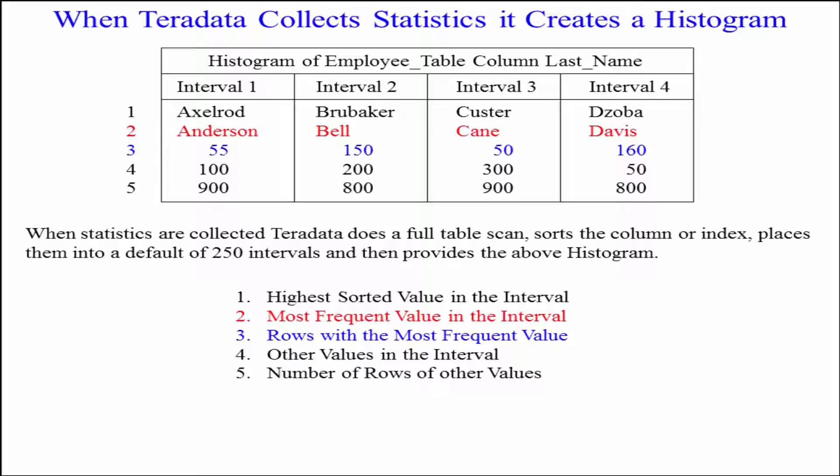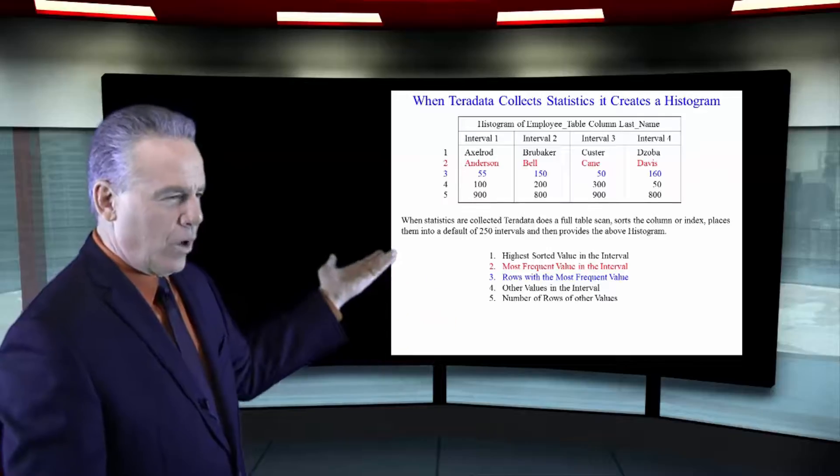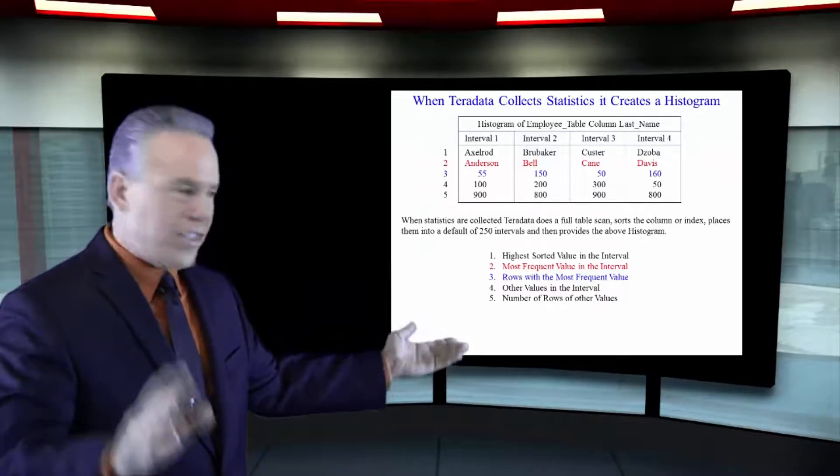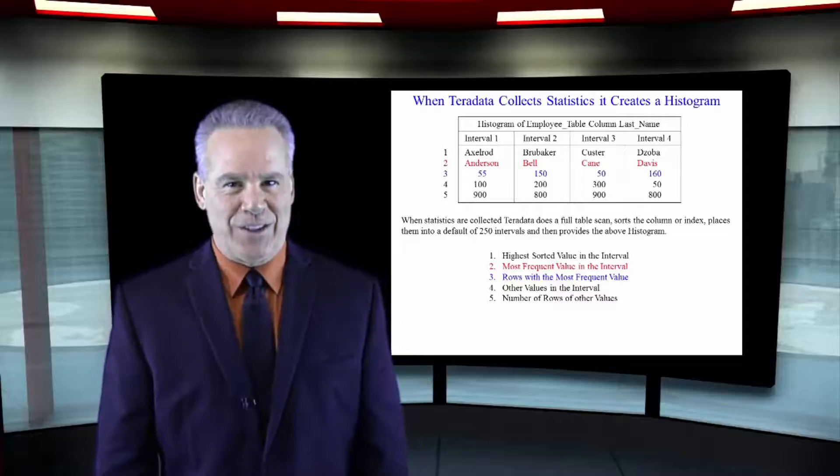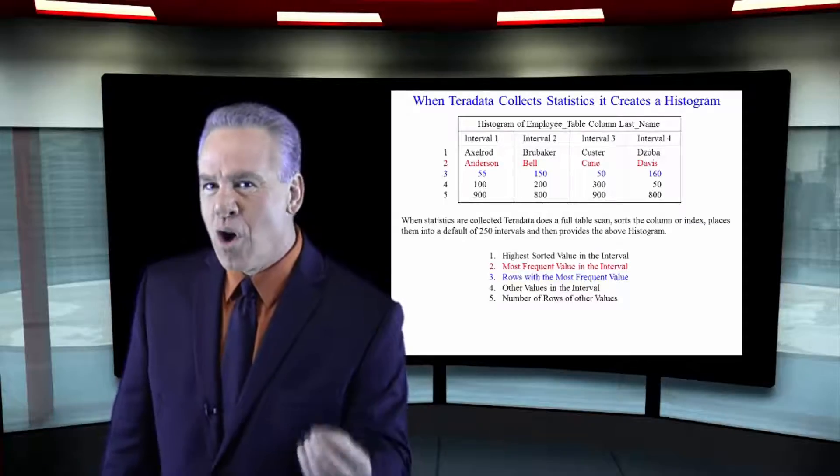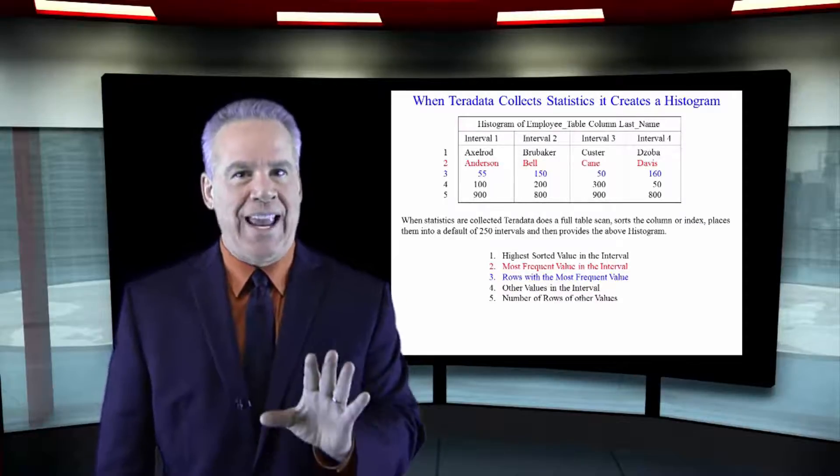You run a query that says select everything where the last name is Anderson, the parsing engine goes, there's 55 of them out there. This is where it gets really interesting. There were 100 other last names in this interval that were not Anderson, 900 rows that were not Anderson.